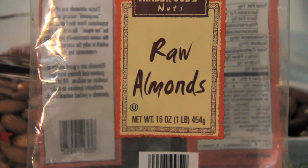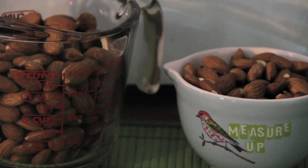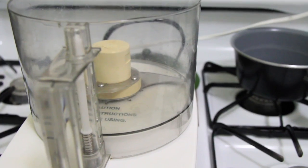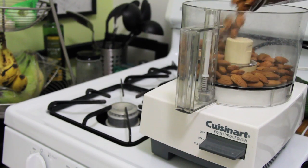Don't soak them, no need to do this since the butter making process will pretty much cook them. The first step is to set up your processor, pour in your almonds and turn it on.